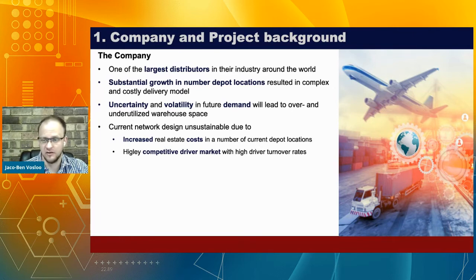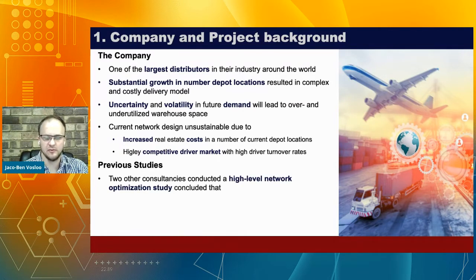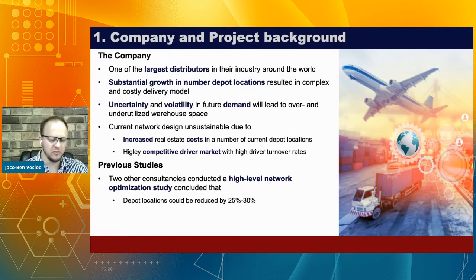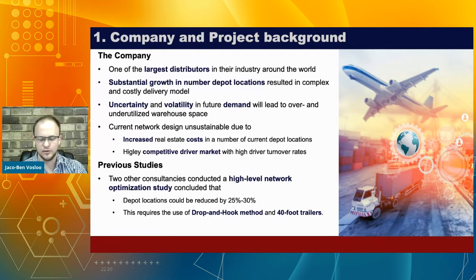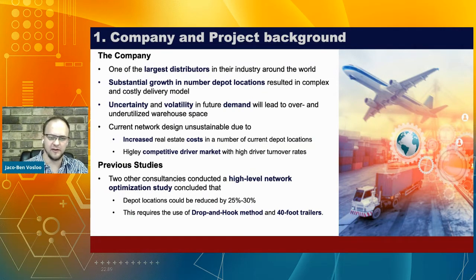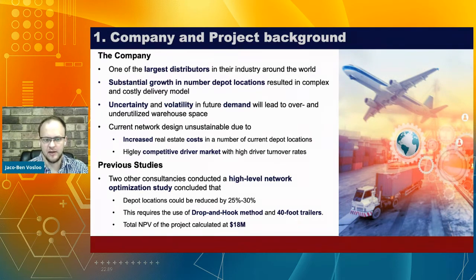This volatility will lead to over- and under-utilized warehouse space at their current depots. The current network design is becoming unsustainable due to increases in real estate costs and a highly competitive driver market, resulting in high driver turnover. Previously, two consultant companies conducted high-level network optimization studies concluding depot locations could be reduced by 25 to 30 percent, but requiring a drop-and-hook delivery method and larger 40-foot trailers. The drop-and-hook method involves dropping trailers at a lot for other contractors to handle final-mile delivery. The total net present value of this project was calculated at about $18 million.